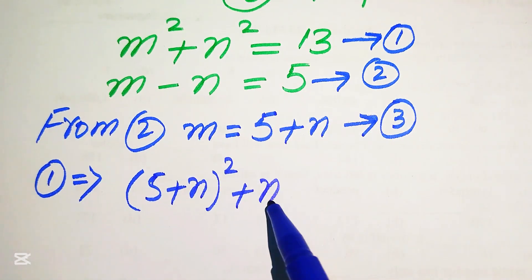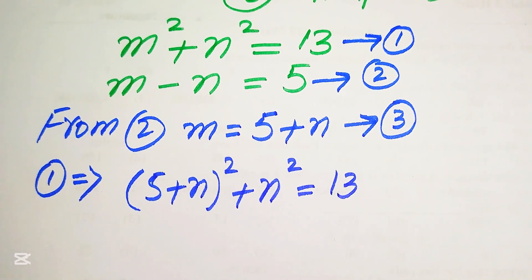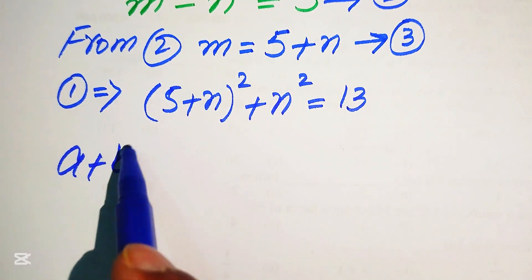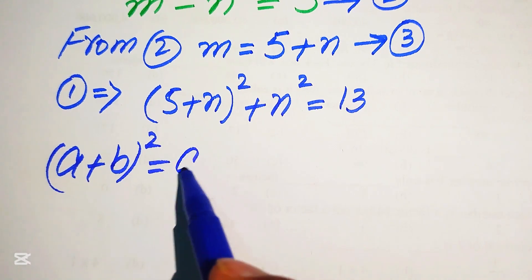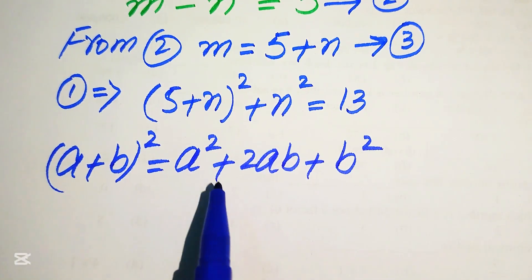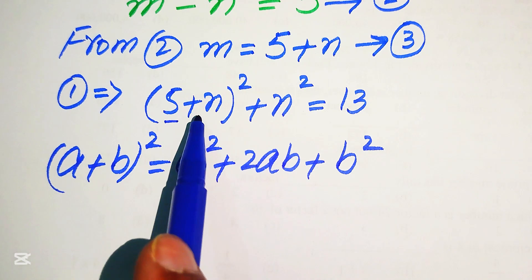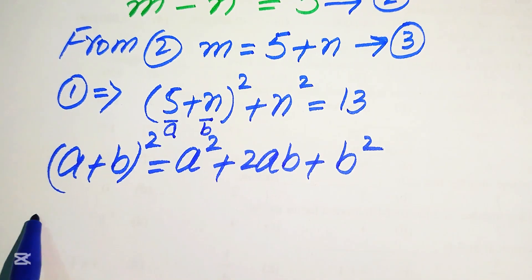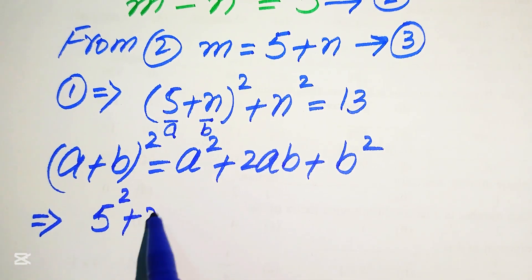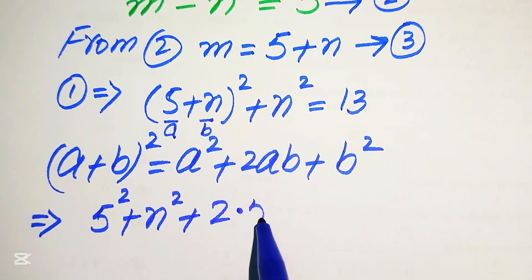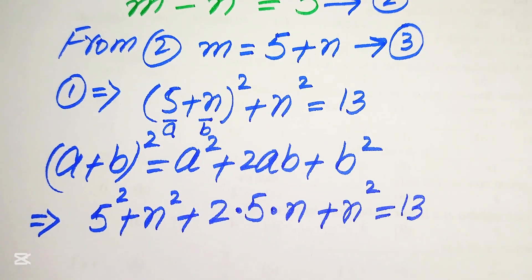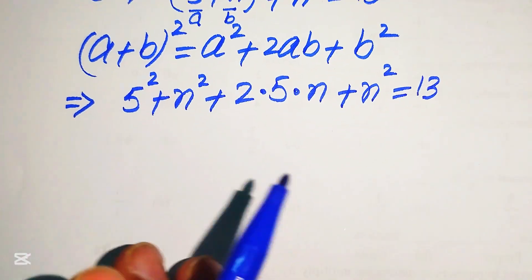Substituting m = 5 + n into equation number 1 gives us (5 + n)² + n² = 13. We now apply the algebraic formula: (a + b)² = a² + 2ab + b², where a = 5 and b = n. Expanding, we write 5² + 2(5)(n) + n² + n² = 13.